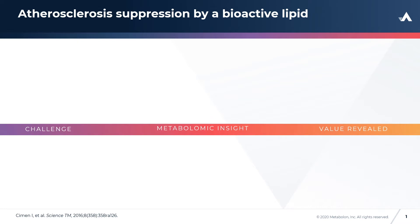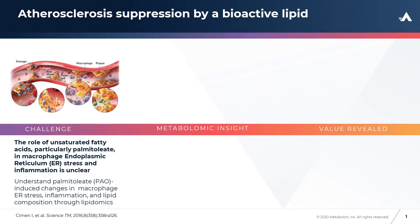Atherosclerosis is a chronic inflammatory disease of the arterial wall induced by lipid imbalance and disrupted immune system. Atherosclerosis in human and mice has shown evidence of endoplasmic reticulum stress and macrophage inflammasome activation. Interestingly, there has been some support of inhibiting these processes to alleviate atherosclerosis in mice.